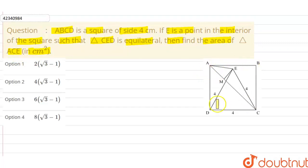This triangle - what do we need to do with this question? ABCD is a square of side 4 cm. There is a point E in the interior of the square such that triangle CED - here I have this triangle CED - is equilateral. What do we need to tell you? ACE is the triangle ACE. We need to find the area.